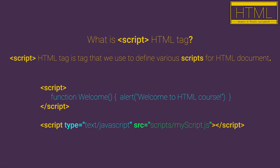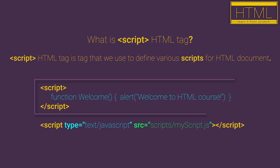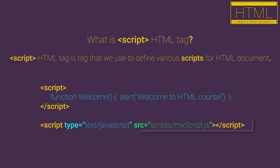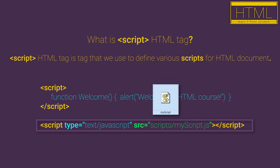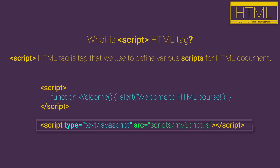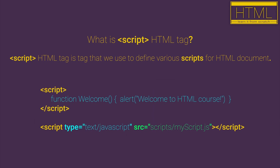There are two ways that you can use scripts in your HTML document. First, you can define a JavaScript function directly in the script HTML block. And second, you can import an external JavaScript file, so you can use functions from that file in your HTML document.